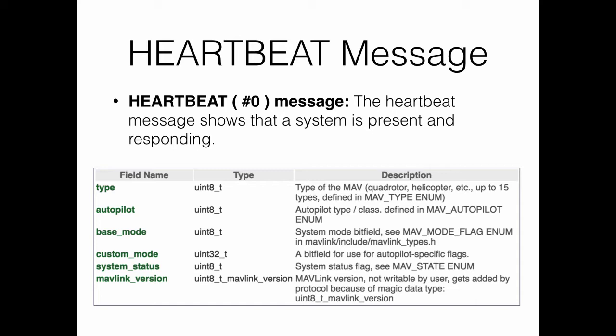In addition to the header, the heartbeat message payload contains important information about the vehicle. The first field is the type, which indicates the type of vehicle. There are 15 predefined types including quadcopter, helicopter, plane, rover, and others. The autopilot field indicates the type of autopilot. For example, 0 indicates a generic autopilot, 1 indicates the Pixhawk autopilot, and 3 indicates ArduPilot Mega, which is compatible with Arduino among other autopilots.